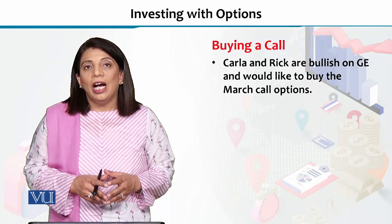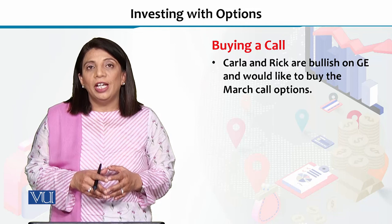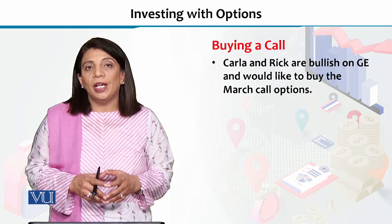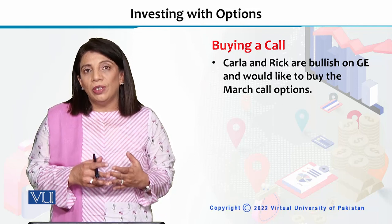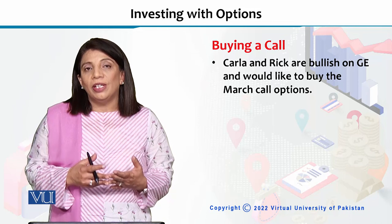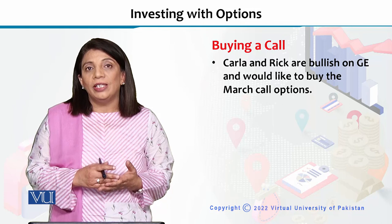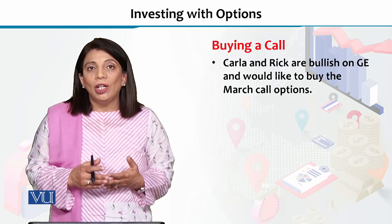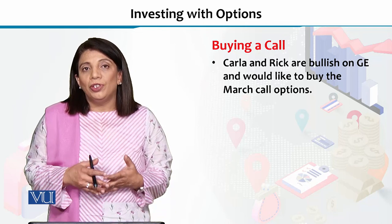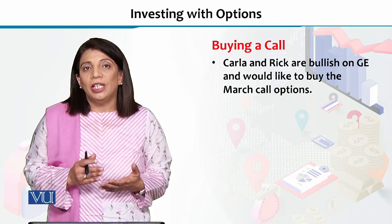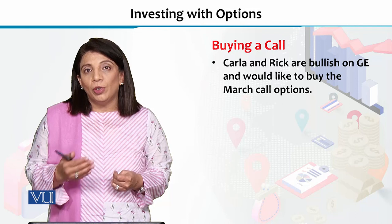In this section, I will explain how different types of investors invest in options by using an example. As I mentioned earlier, there could be two types of options: buying the call option and selling the put option. I will explain how investors will buy the call or sell the put option.